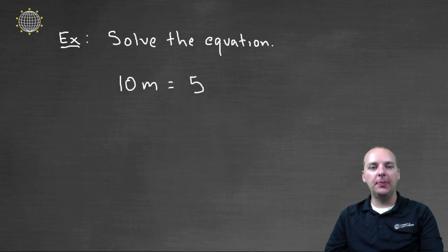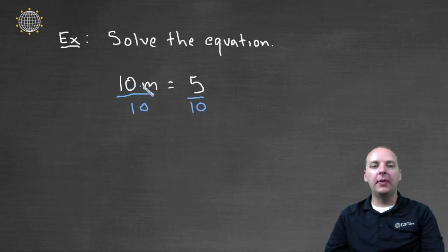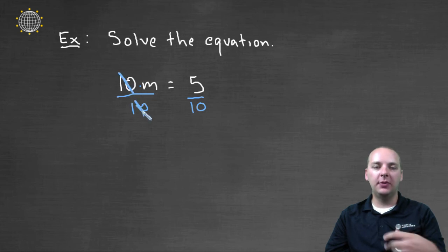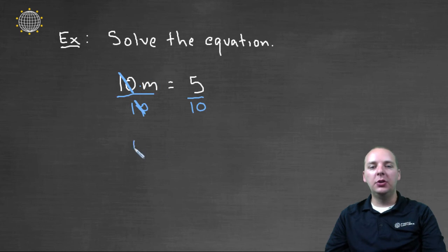Alright, last example. Ten m equals five. Well we're going to look to see what's being done to m, and we're going to do the opposite. Well m is being multiplied by ten. So we are going to divide by ten. And what's nice about that, the reason that works well, is that would make the tens cancel. Times ten and divide by ten cancel each other.